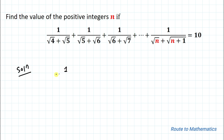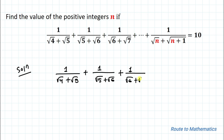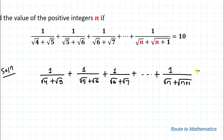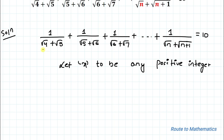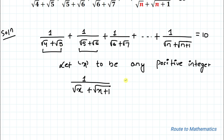We have: 1/√4+√5 + 1/√5+√6 + 1/√6+√7 + ... + 1/√n+√(n+1) = 10. Let's consider x to be any positive integer. If you observe, each term is in the form 1/(√x + √(x+1)). For example, if x = 4, the next term involves √(4+1) = √5.